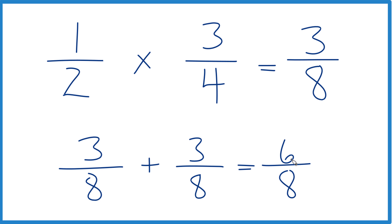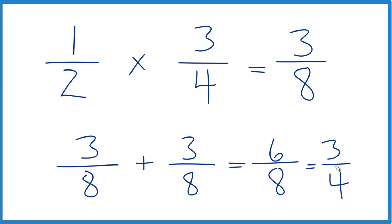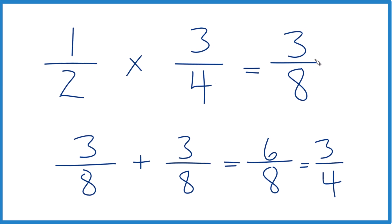But we can simplify this, divide both by two, and we end up with three fourths. So yeah, it makes sense. One half of three fourths is three eighths.